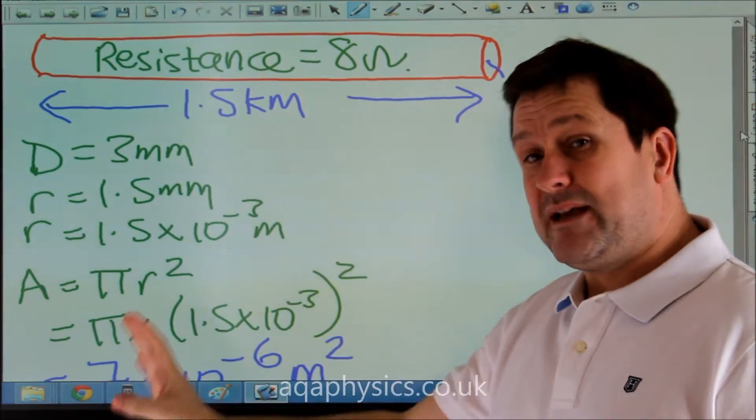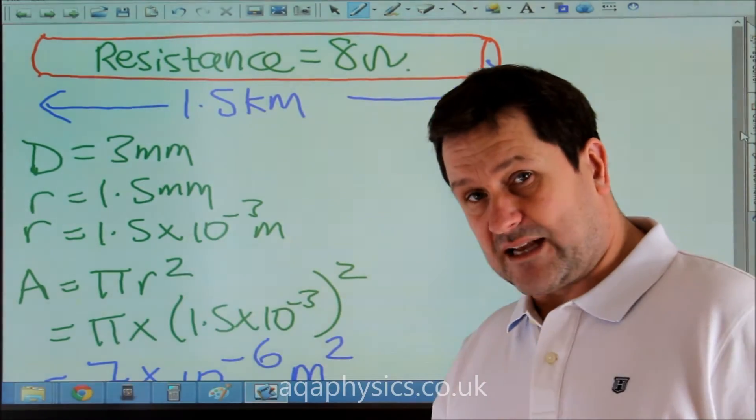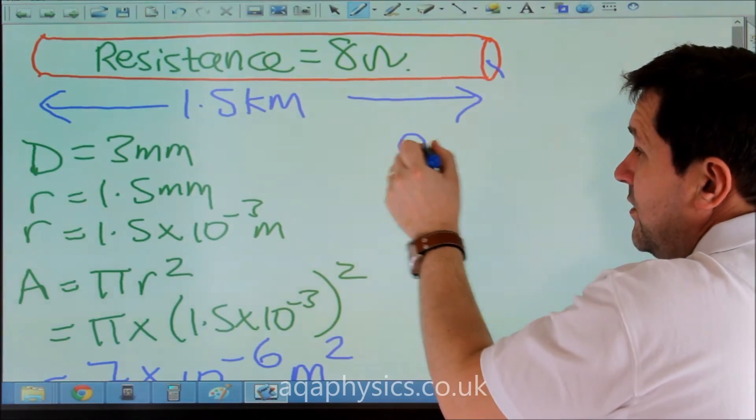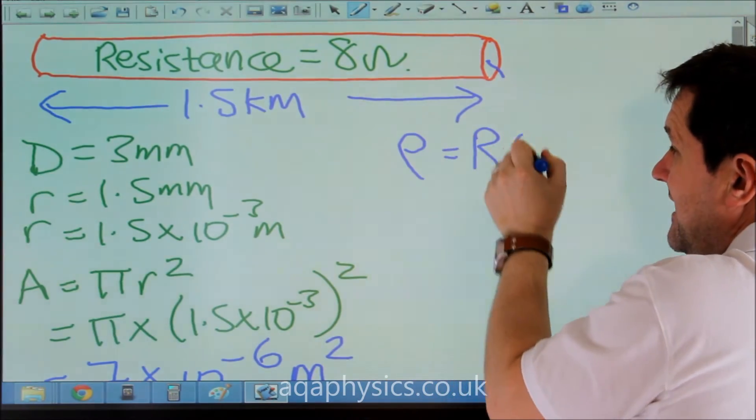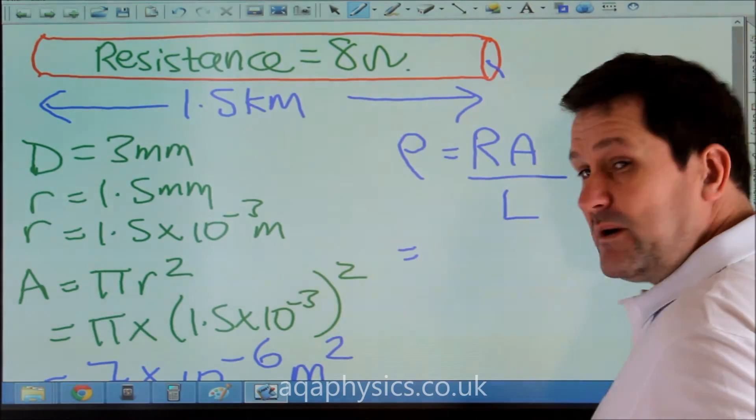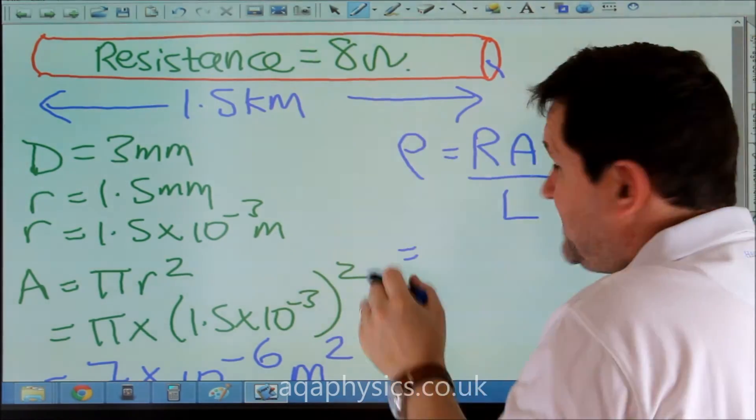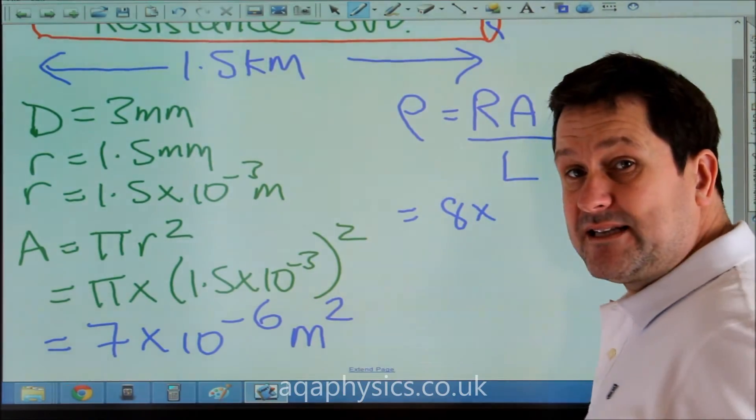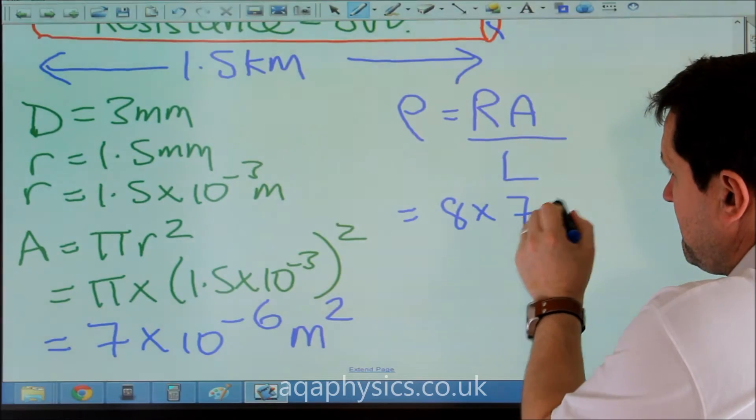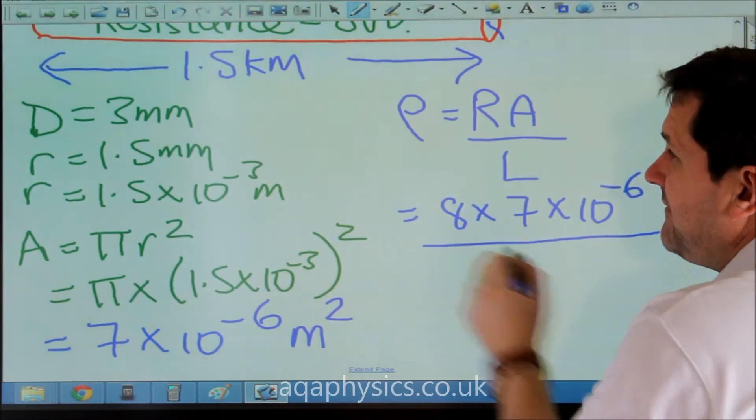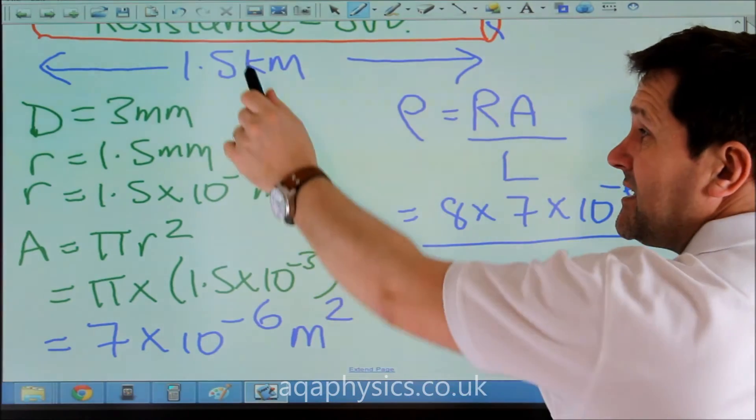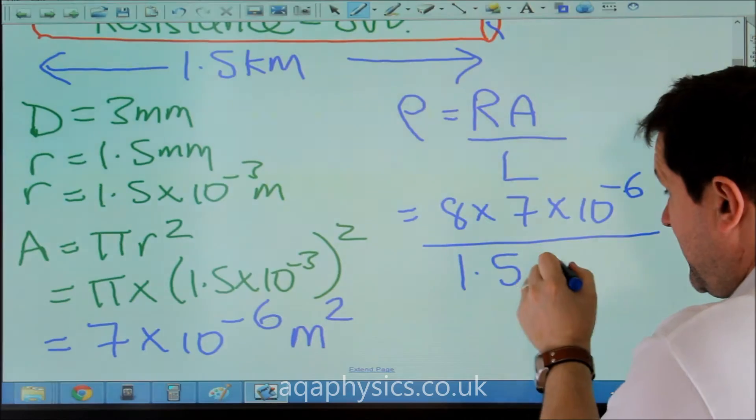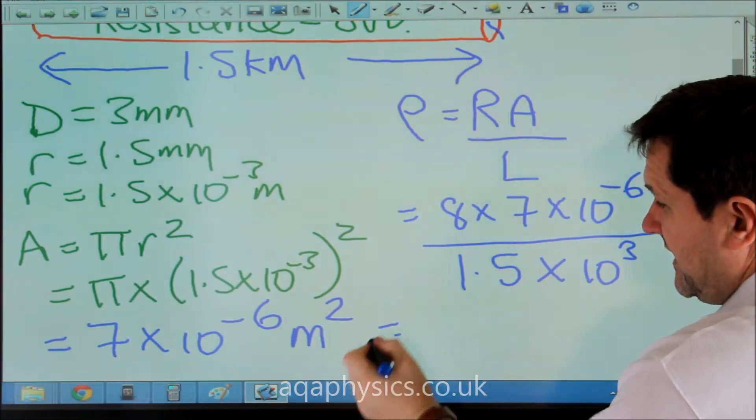The most common problem, in my experience, is people not doing the area correctly. The next thing you would do to work out the resistivity, we know that ρ = RA/L. I would say, well, the resistance is 8. We've worked out A to be 7 times 10 to the minus 6. The only other thing we're going to need to worry about is the length, which is 1.5 kilometers, which is times 10 to the 3.